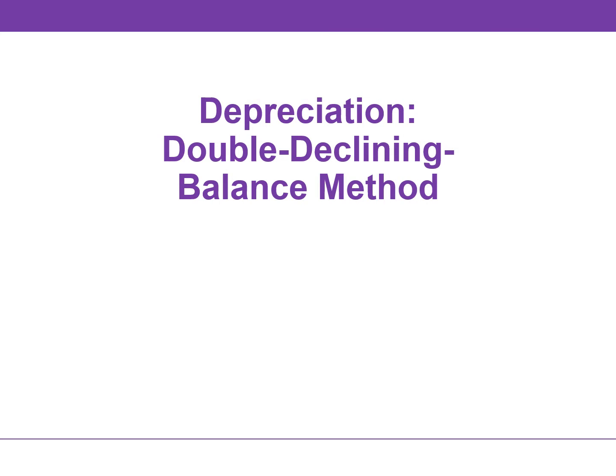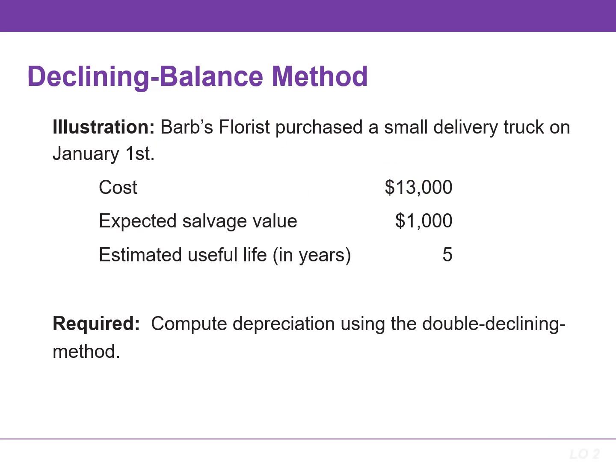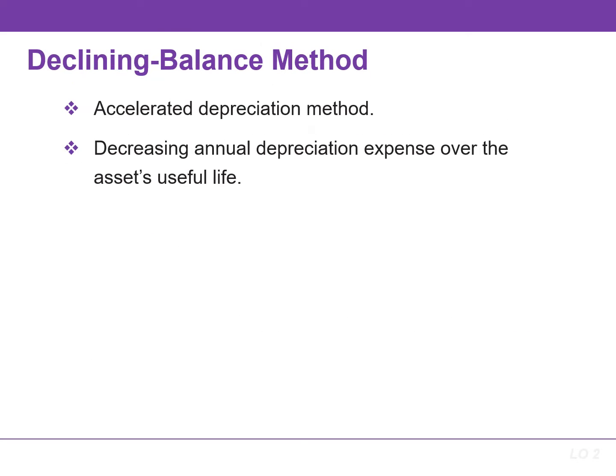This video will discuss the double declining balance method. We'll use this information to illustrate this method. This method is called an accelerated depreciation method because it results in more depreciation in the earlier years of an asset's life and less depreciation in the later years.